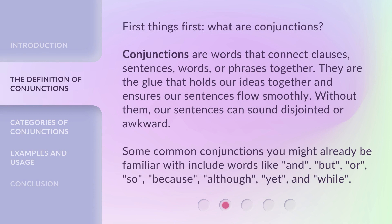First things first — what are conjunctions? Conjunctions are words that connect clauses, sentences, words, or phrases together. They are the glue that holds our ideas together and ensures our sentences flow smoothly. Without them, our sentences can sound disjointed or awkward.